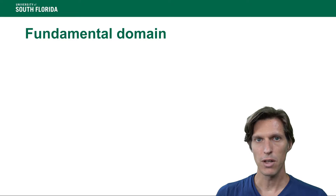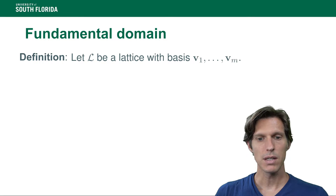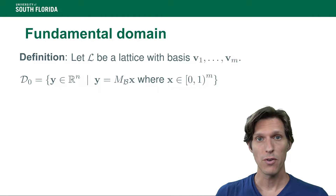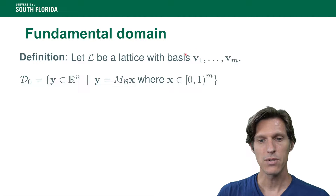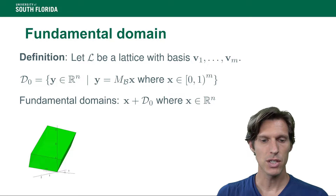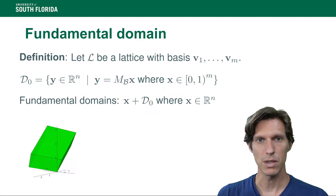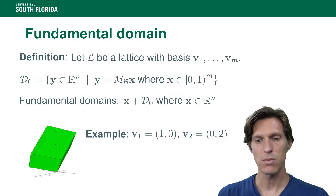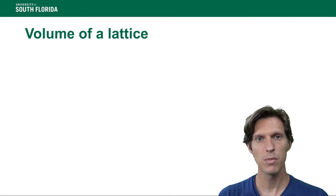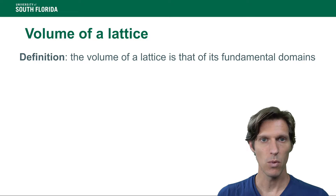Next we need to define the fundamental domain of a lattice. Given a basis of a lattice, the fundamental parallelepiped is all the linear combinations of the vectors multiplied by coefficients between 0 and 1. A fundamental domain is a translation of this fundamental parallelepiped defined by this basis, so it contains only one lattice point and has maximal size with respect to this property. For example, if v1 is (1,0) and v2 is (0,2), then the fundamental domain is going to be the 1 by 2 rectangle.